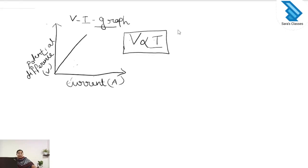Directly proportional means when one quantity increases the other quantity also will increase. So when the current increases, the voltage also increases; when the current decreases, the voltage also decreases. The voltage and current in the circuit are directly proportional.